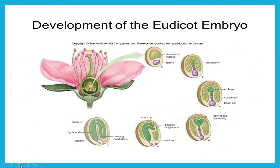This is also another picture of the development of the eudicot embryo. As we can see from the flower, we have the endosperm nucleus and the zygote. Then the zygote splits the fertilized egg into a basal and a terminal cell. Later on, the basal cell continues to divide, producing a suspensor which anchors the embryo. And then the cotyledons begin to form as bumps of the pro-embryo. All of this happens inside the seeds.